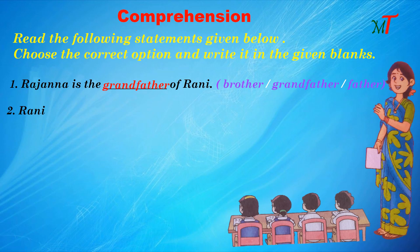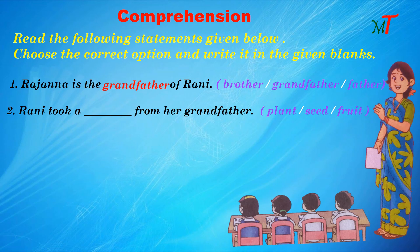Second one: Rani took a dash from her grandfather. Three options are given: Plant, Seed, and Fruit. The correct answer is Seed. So we write seed in the blank.